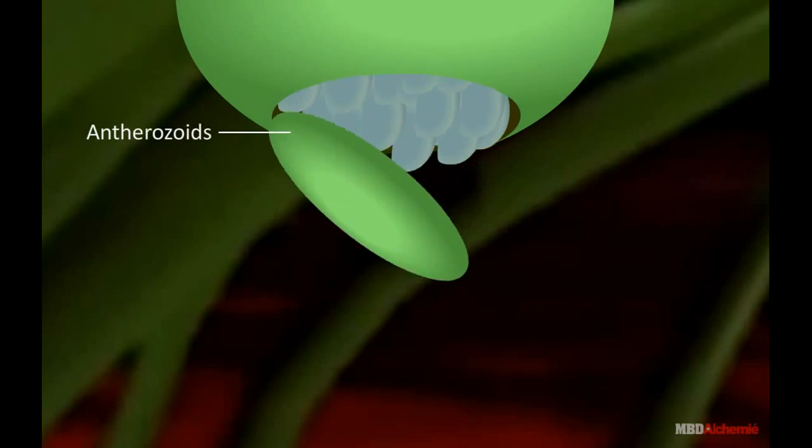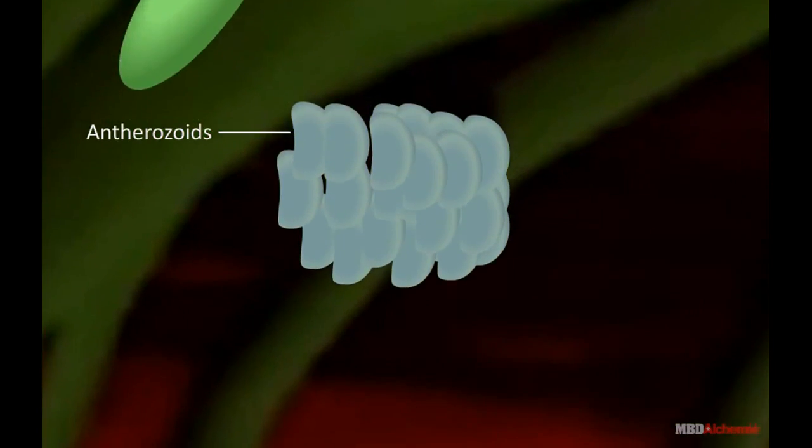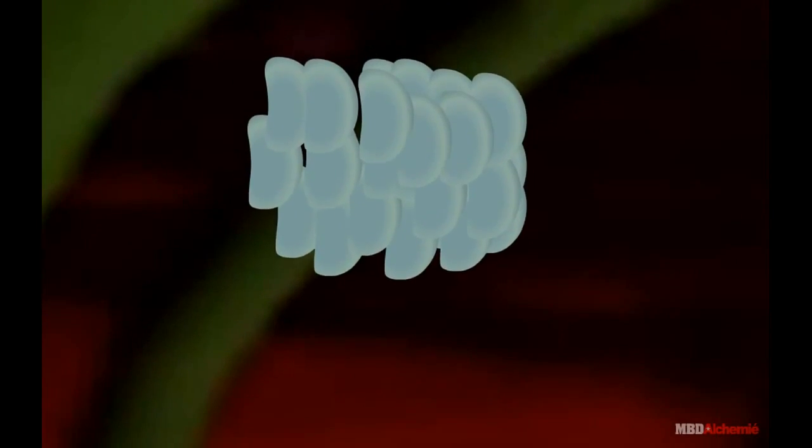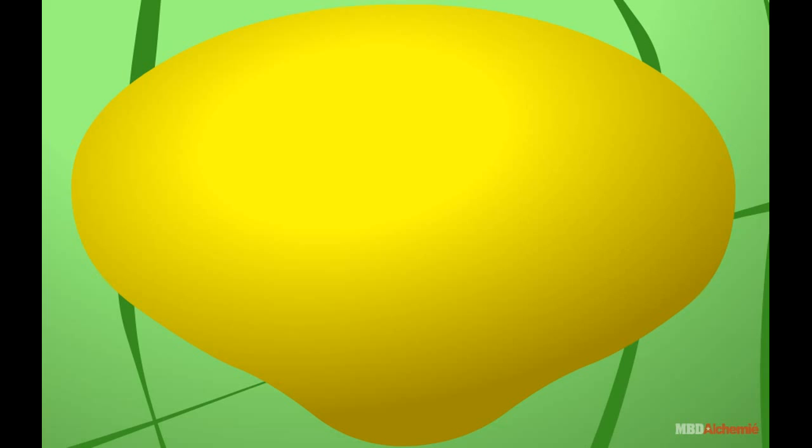Antherozoids swim in water by their cilia. One of the sperm fuses with the egg to form a zygote. It covers itself with the cell wall and is called an oospore. The oospore divides and re-divides to form the embryo.